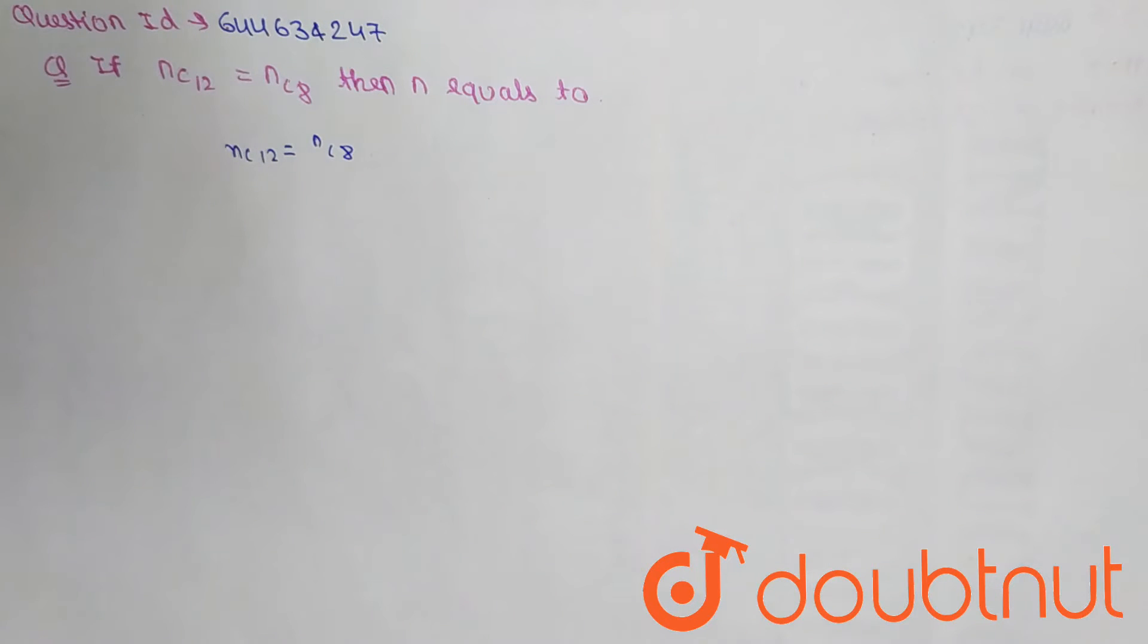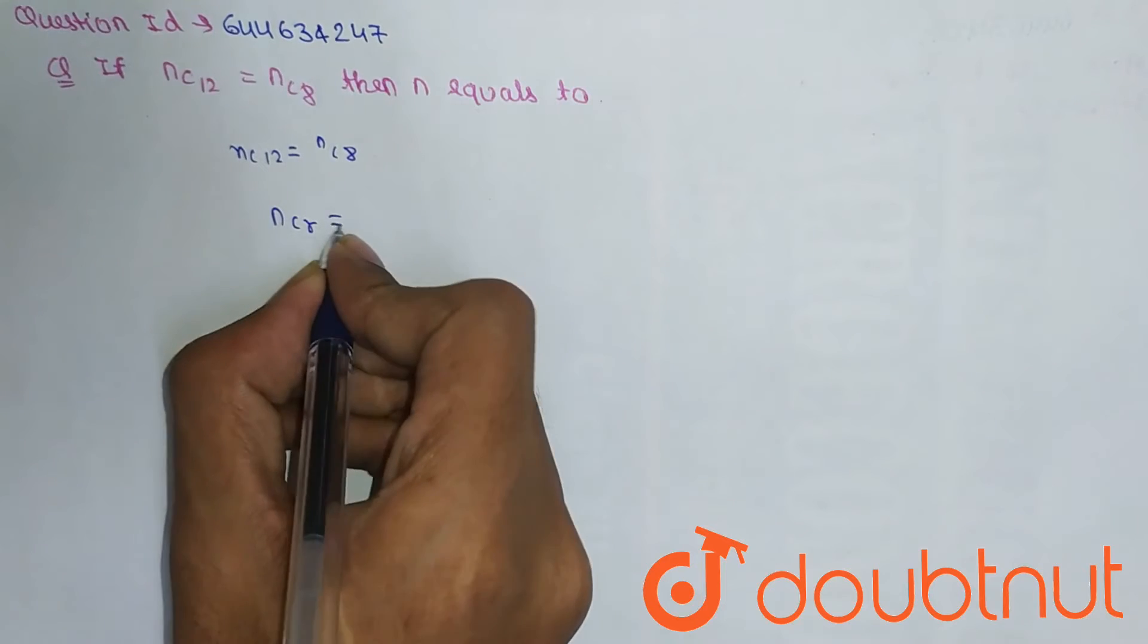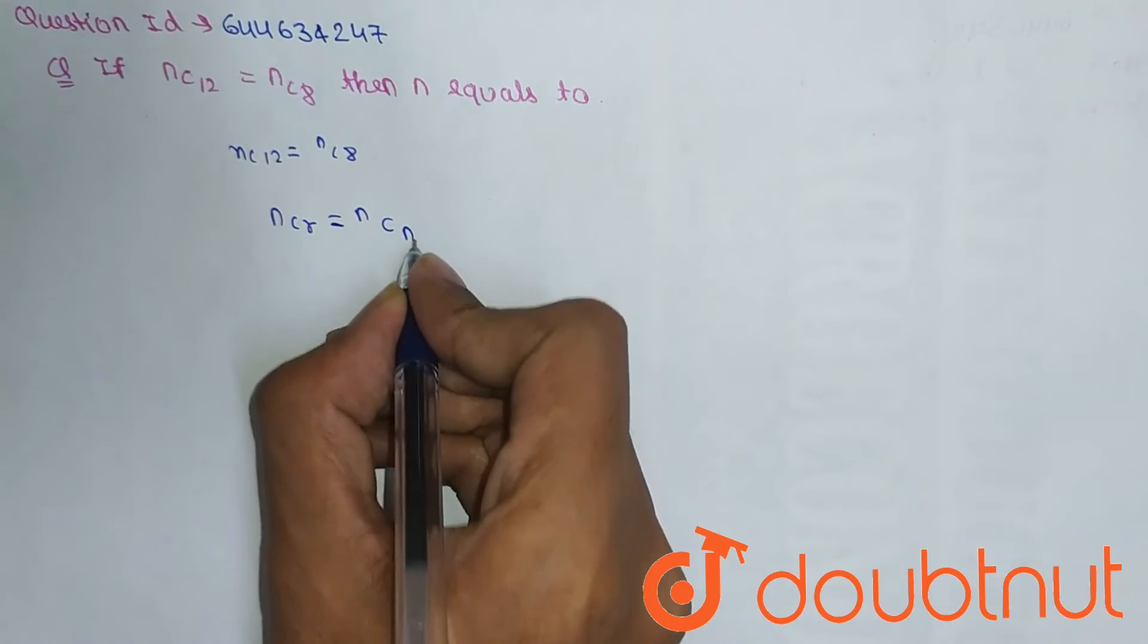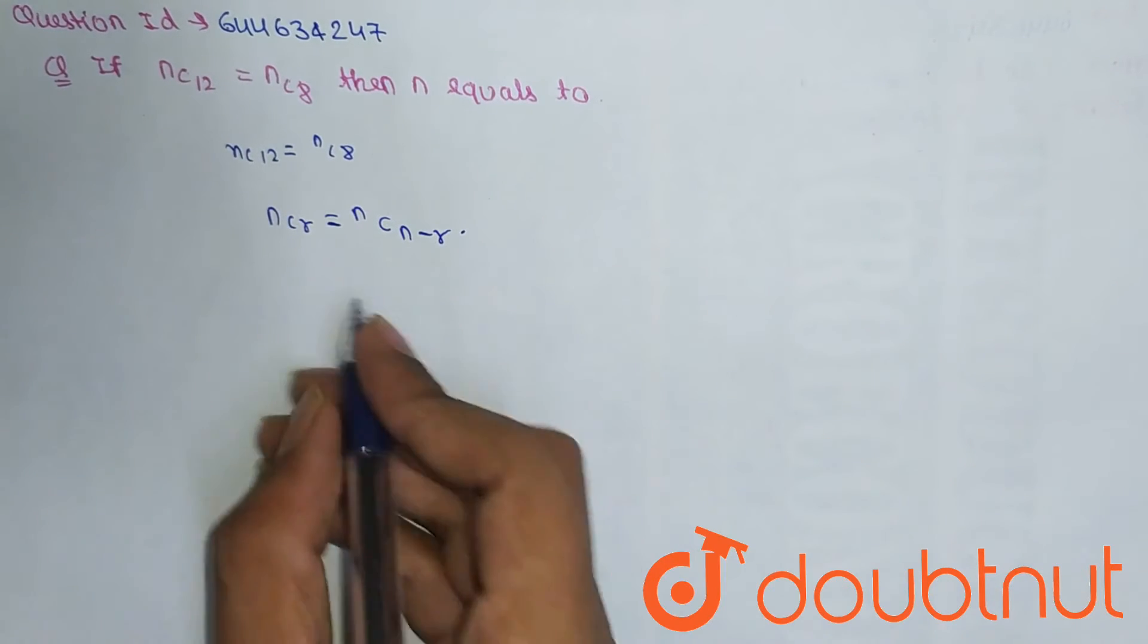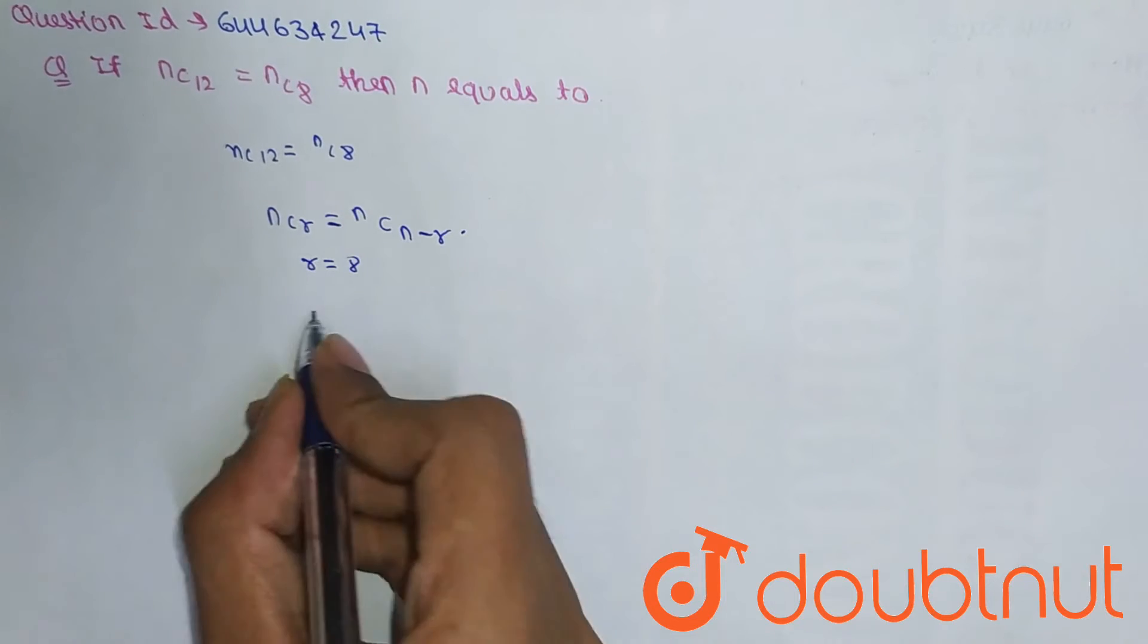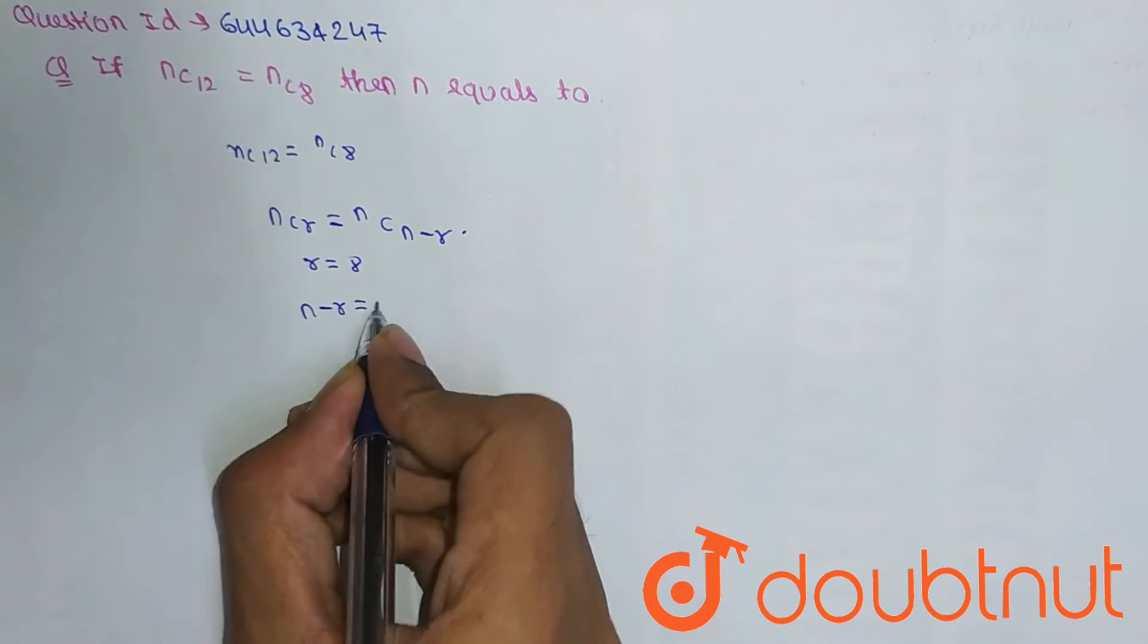For this, there is a very common property: nCr equals nC(n-r). So let's suppose here r equals 8 and n-r equals 12.